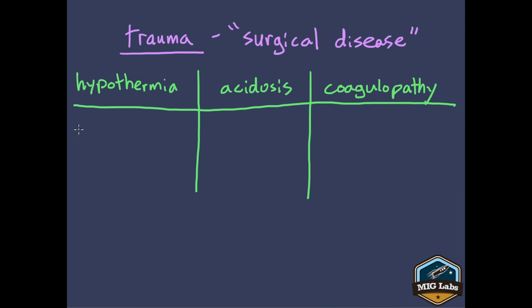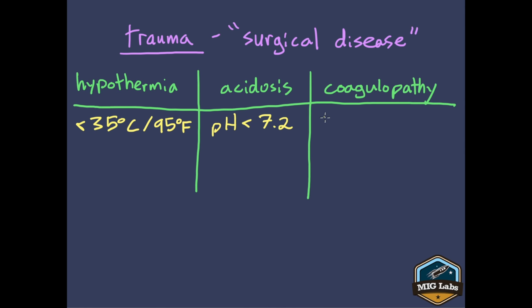Hypothermia is, of course, the patient getting too cold. As these studies defined it, hypothermia is a core temperature dropping below 35 degrees Celsius, which is about 95 degrees Fahrenheit. Acidosis is when the patient's blood becomes too acidic — defined in those studies by a pH of less than 7.2. Coagulopathy is the body not being able to clot efficiently, defined in the studies with an INR greater than 1.5. These three factors together become the trauma triad of death.